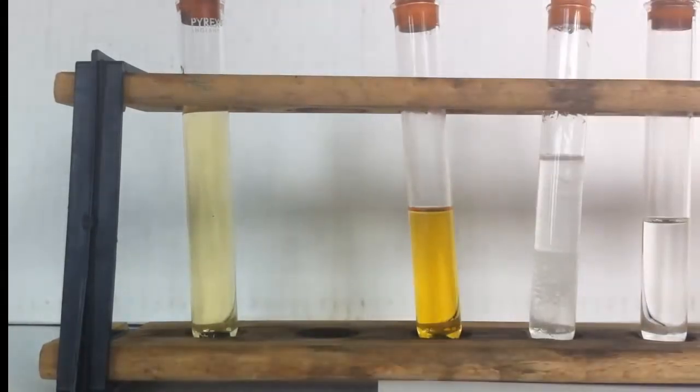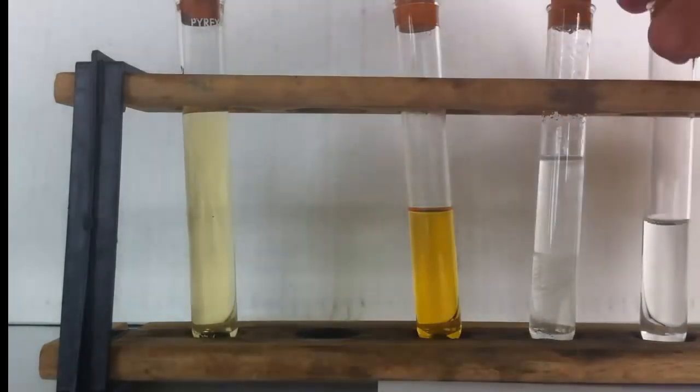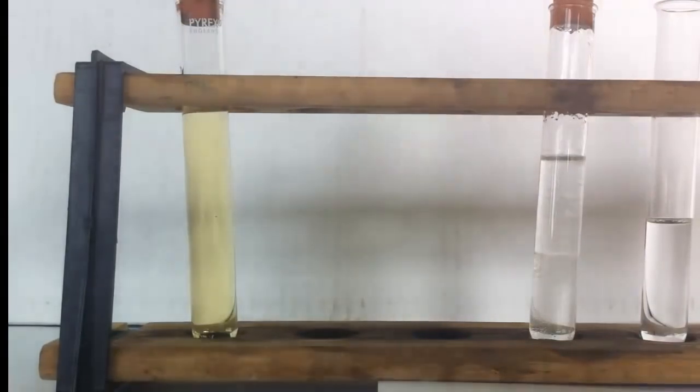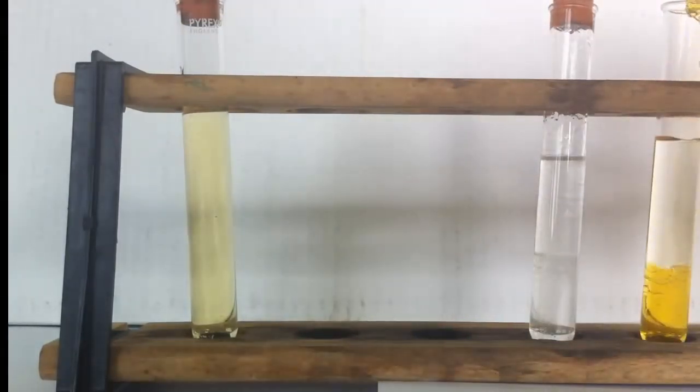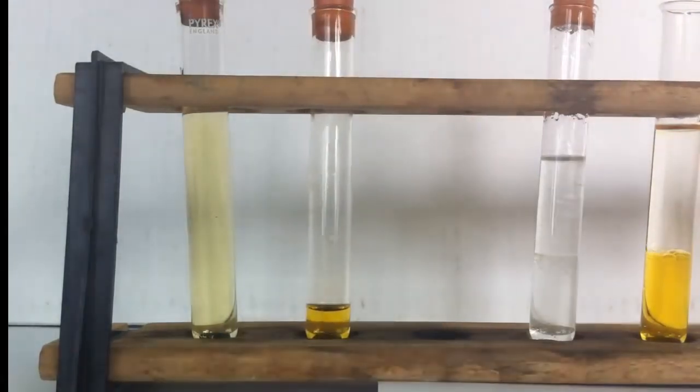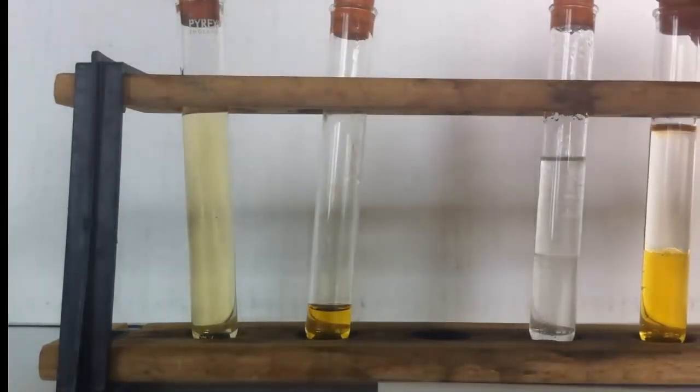Let's try that now with the cyclohexene. Here on the right. So again I'll add roughly the same volume of bromine water. We're expecting a negative result this time. We're expecting the color of the bromine water to persist, to remain.